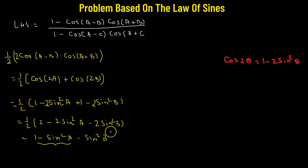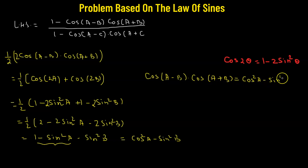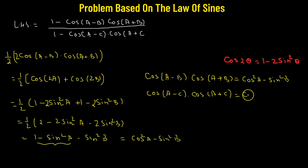Since 1 − sin²A = cos²A, we get cos(A − B)·cos(A + B) = cos²A − sin²B. Similarly, the denominator term cos(A − C)·cos(A + C) reduces to cos²A − sin²C.